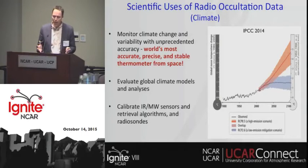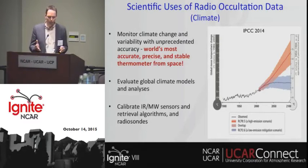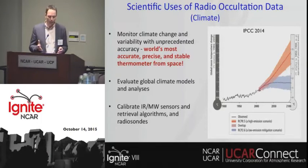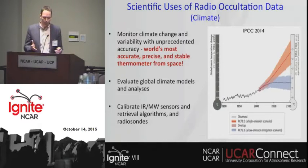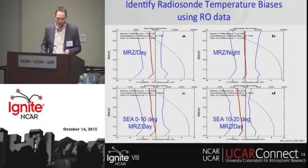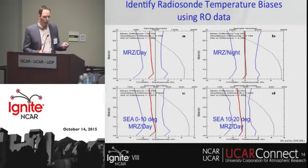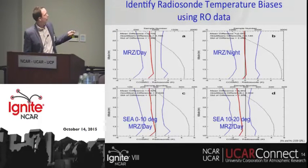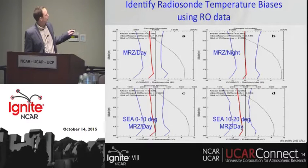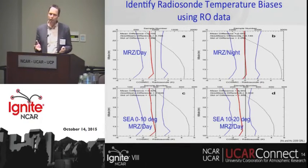In terms of climate, GPS RO is really the world's most accurate, stable, precise thermometer from space. We can evaluate global climate models, and we can also calibrate instruments such as radiosondes. These plots show comparisons of radiosonde temperature with RO temperature. This is a zero line, the red line is the mean difference, and we see radiosonde temperature biases with our data.